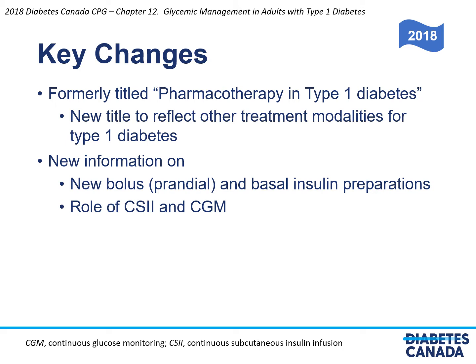Key changes to the 2018 Chapter 12 include a change in title from pharmacotherapy in type 1 diabetes to glycemic management in adults with type 1 diabetes, reflecting treatment modalities other than insulin for type 1 diabetes. There is also new information on new insulin preparations as well as the role of CSII and CGM in type 1 diabetes management.